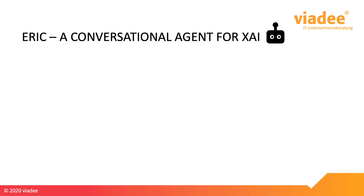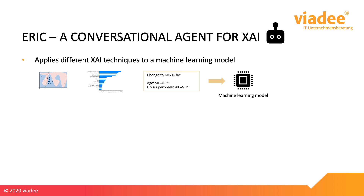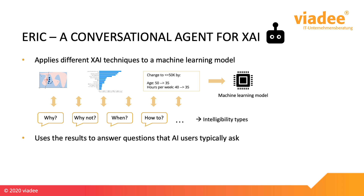The conversational agent we implemented is named ERIC, and the idea behind ERIC is that you can have an interactive conversation about a machine learning model — ERIC explains the behavior of that model by replying to specific questions that you ask it. What ERIC basically does is apply different techniques from explainable AI to a machine learning model and then use the results to answer questions asked by the user. In literature, these questions are known as intelligibility types — intelligible constructs that form a query paradigm derived from questions users of intelligent systems often ask. ERIC stores the mapping between explainable AI techniques and question types as expert knowledge.